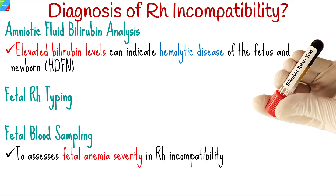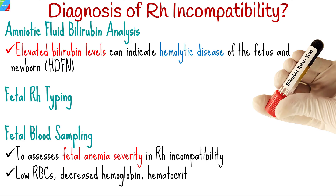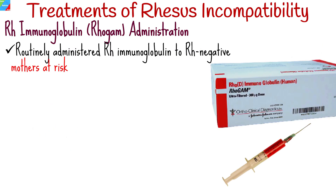Fetal blood count assesses fetal anemia severity in Rh incompatibility. Low red blood cell levels, decreased hemoglobin, hematocrit, and other anemia markers may be seen in the sample. The treatment of Rhesus incompatibility aims to prevent sensitization in Rh negative mothers and manage complications that may arise due to Rh alloimmunization in subsequent pregnancies.